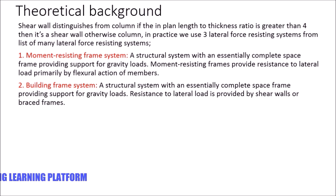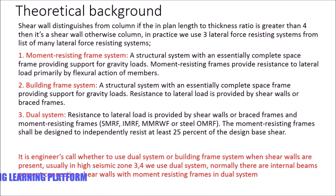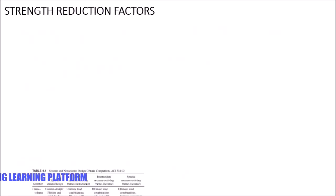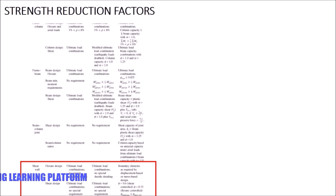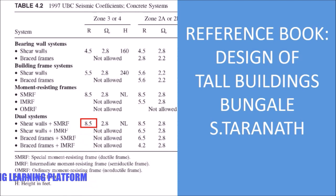The building frame system, for which we designed a shear wall in the previous video, is a structural system with a complete space frame for gravity and lateral load, while in a dual system resistance to lateral load is provided by shear walls or braced frames. It is the engineer's choice whether to use a dual system or building frame when shear walls are present; usually in high seismic zones we use a dual system. Strength reduction factors for our case are shown from the book — for flexion and shear design the strength reduction factor for shear walls plus SMRF is 8.5.